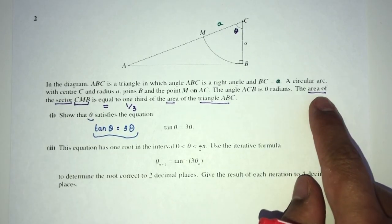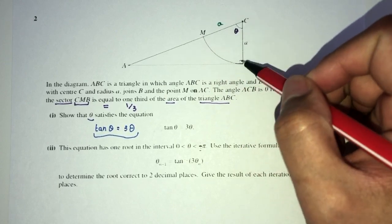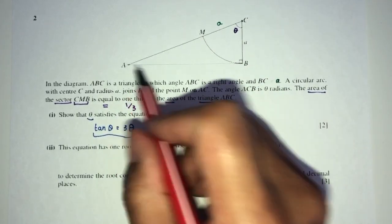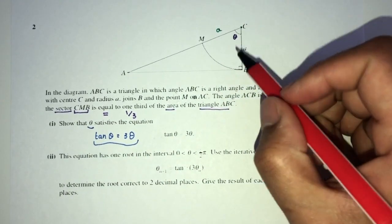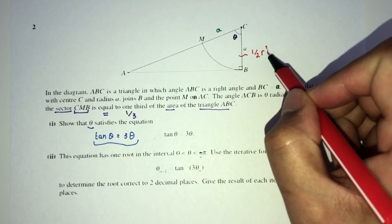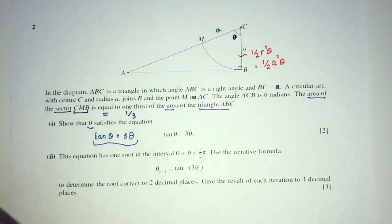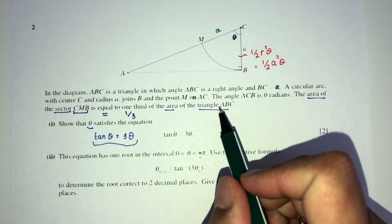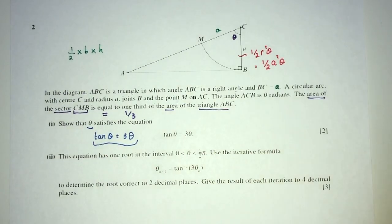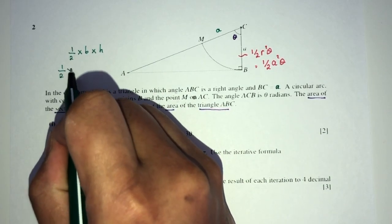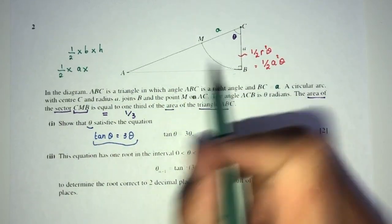How? Let's use this given information, the area of the sector CMB is equal to one-third of the area of triangle ABC. Now, one by one, how would you find area of sector CMB? We know the formula for sector is half r²θ. Now, here the radius is A, that will be A²θ for the angle in the middle. Now, how would you find the area of a triangle ABC? That is half times base times the perpendicular height, we should know this. Let's find the value of the base. Height we know, which is the value of A. Now, what is the base? Let's find the base.